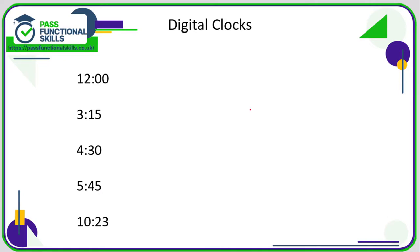Digital time is pretty straightforward. Normally it's written with one number, followed by a colon, and then two more numbers to the right. The numbers to the right correspond to the number of minutes, and the number to the left is the hours, which could be a single digit or two digits. So here, this means 12 hours and zero minutes — when it ends in zero zero, that is o'clock exactly. So this is 12 o'clock.